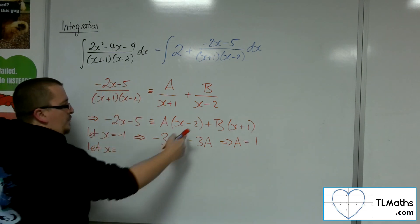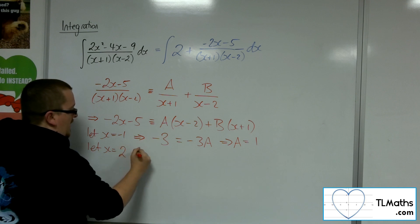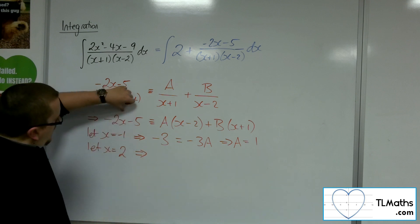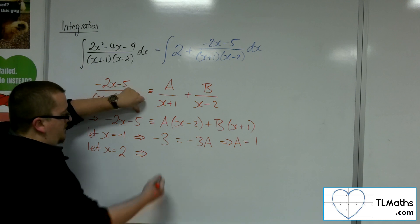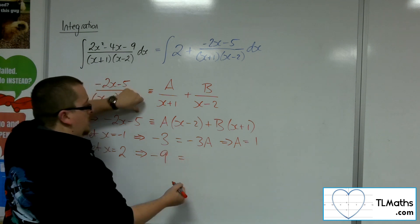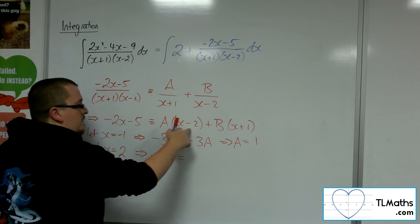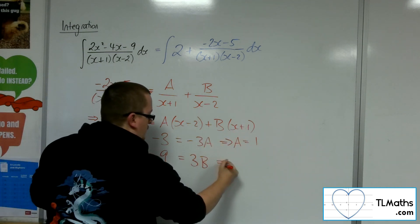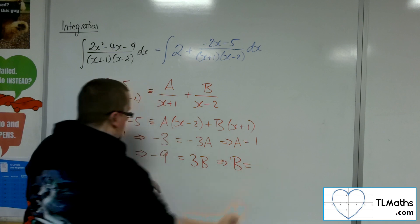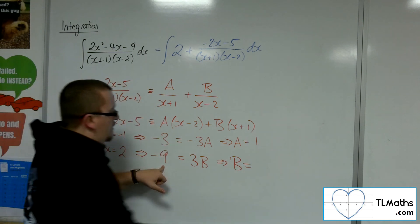And so if we let x be 2 this time, knock out that bracket, we'll get minus 2 lots of 2, so minus 4, take away 5 is minus 9. The 2 knocks out that bracket, we've got 2 plus 1 is 3, so that'll be 3b. So b will be minus 9 divided by 3, so minus 3.